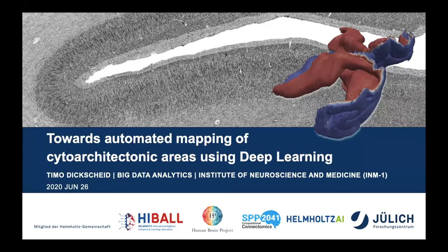The first speaker is Timo Dickscheid from Jülich, a computer scientist, who will speak about towards automated mapping of areas using deep learning. He will talk about the endeavor of mapping cytoarchitectonic areas in the BigBrain and in other brains based on microscopic scans of tissue sections, which is a core part of the HBP, using deep learning.